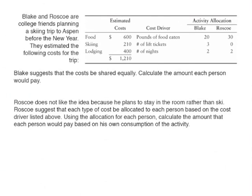Let's look at an example. Blake and Roscoe are college friends planning a skiing trip to Aspen before the new year. Their total estimated costs are $1,210 — $600 for food, $210 for skiing, and $400 for lodging. They determined there is a cost driver for each activity: for food it's pounds of food eaten, for skiing it's number of lift tickets, and for lodging it's the number of nights stayed.